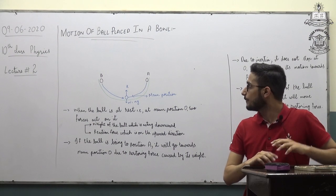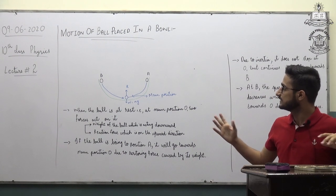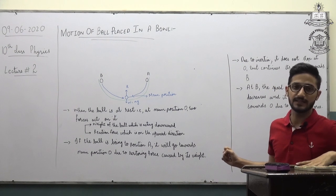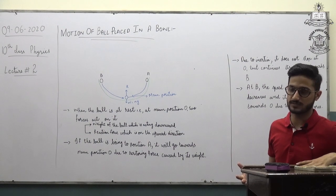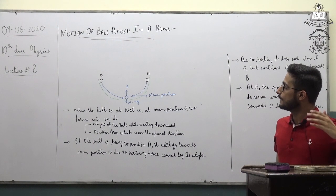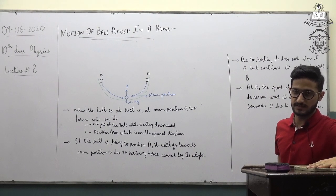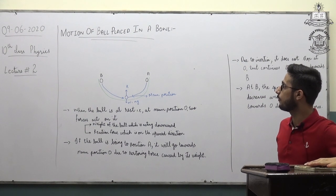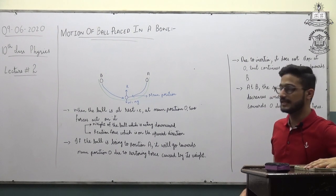Today our topic is another example of Simple Harmonic Motion so that we can better understand this concept. We have already discussed the motion of mass attached to a spring; today our topic is the motion of a ball placed in a bowl.